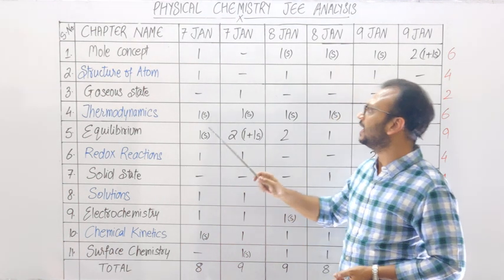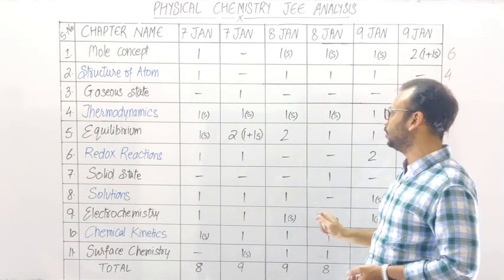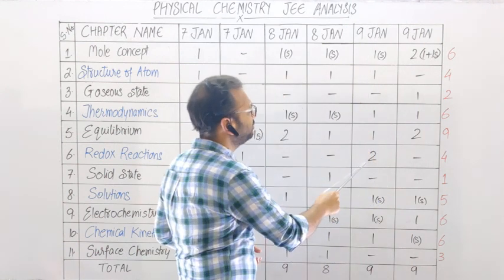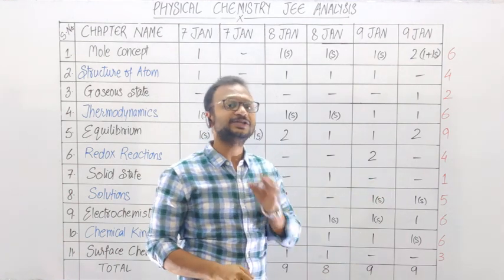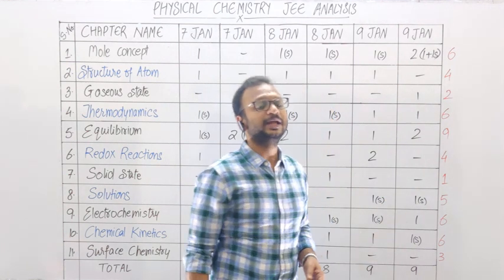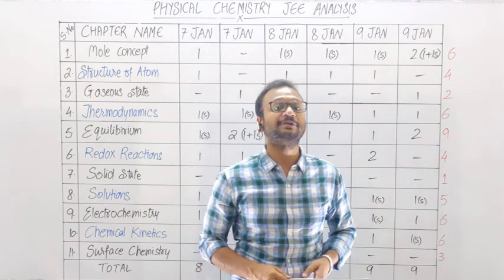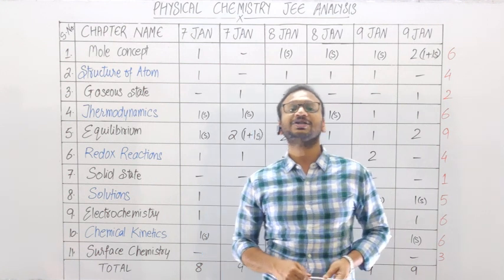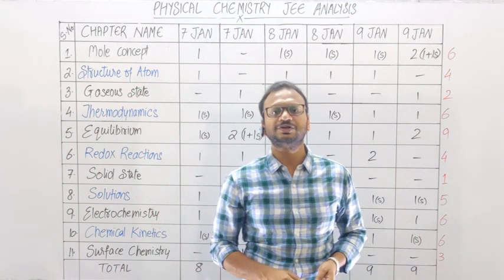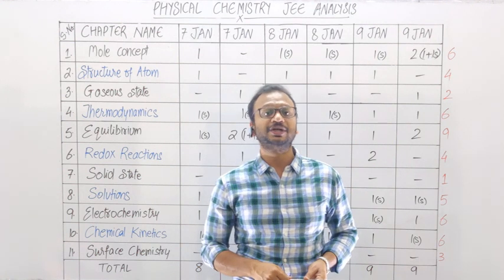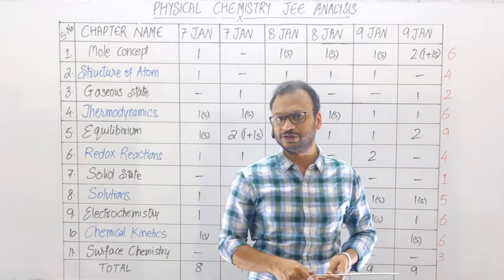Redox Reactions mein: January morning mein ek question, January evening mein ek question; 8th January morning aur evening dono case mein koi question nahin aaya; 9th January morning shift mein 2 questions lekin evening shift mein ek bhi question nahin tha. Total number of questions in 6 papers: 4. Is chapter ki weightage bahut zyada nahin hai; kisi-kisi paper mein ek question aayega, aur ho sakta hai kisi set mein koi bhi question na mile. Redox mein do tarah ke questions zyada poochhe jaate hain — identifying which reaction is a redox reaction, who is getting reduced/oxidized, who is the reductant/oxidant.